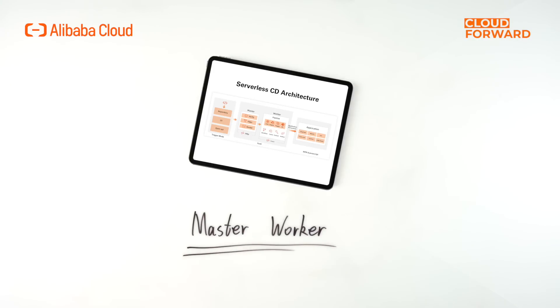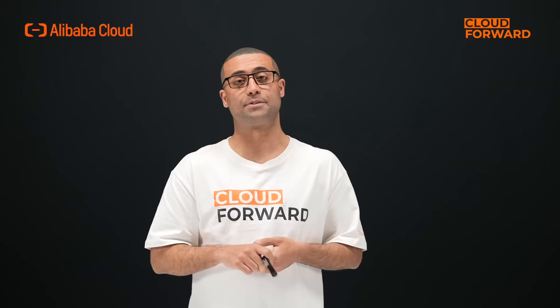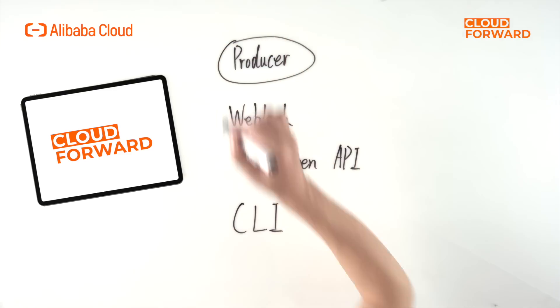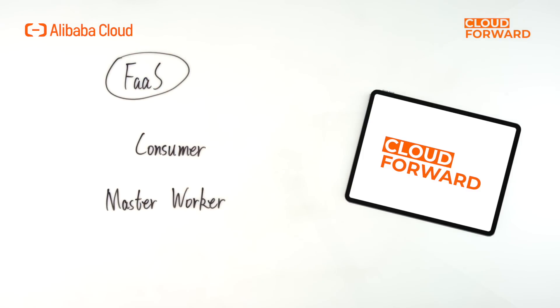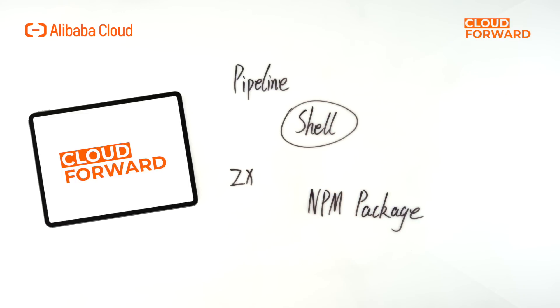In addition, Serverless CD adopts the classic master-worker model and an event-driven architecture. Through Serverless CD, developers can quickly build enterprise-level application management platforms. Trigger plays the role of a producer in the event-driven architecture. Serverless CD currently provides three trigger modes: automatic trigger through webhook, trigger through OpenAPI, and trigger through CLI. The fast platform is the core part of the entire platform and plays the role of the consumer in the event-driven model, adopting the classic master-worker model. Serverless CD supports three ways of customizing pipeline: shell scripts, ZX scripts, and using custom application's NPM package for extension.